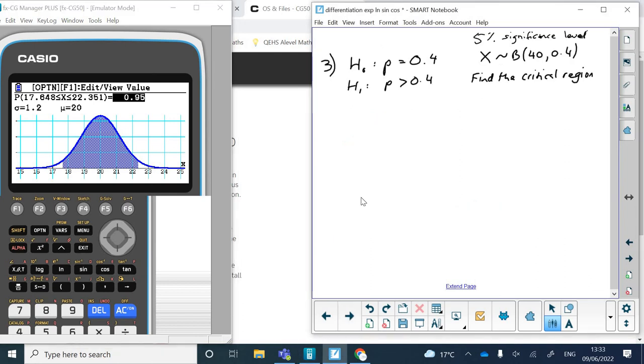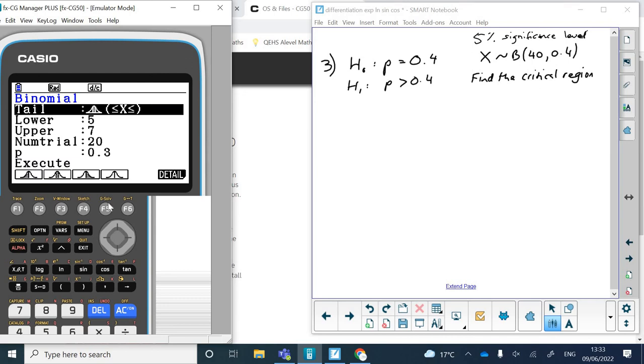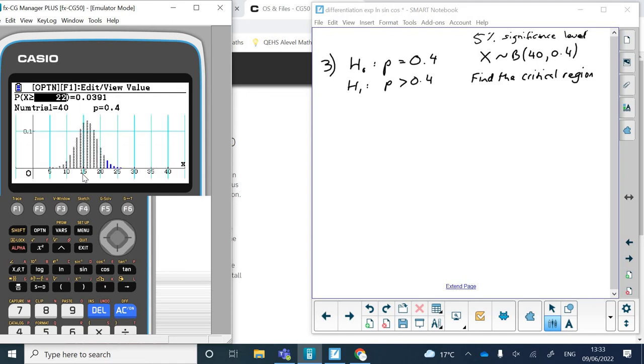Right, and then everyone's favourite, it's the binomial hypothesis test. So we're testing the probability of success is 0.4 against probabilities greater than 0.4 at the 5% significance level, and we've got 40 trials. So let's have a little go at that, so on the calculator we exit, and we exit again, and we go up to the binomial, and then we want a greater than one. I don't know what x is going to be, no idea. I've got 40 trials, and the probability of success is 0.4. Let's draw that. So we want a 5% significance level, so I type in 0.05.